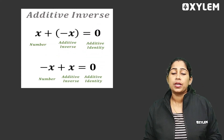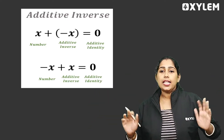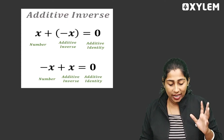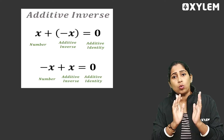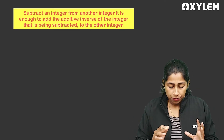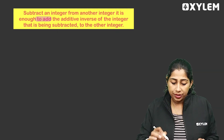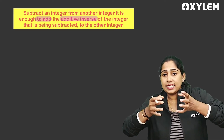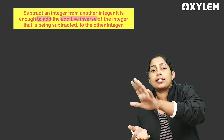Additive identity. Additive identity. If you subscribe to this channel, this is one of the ways we learn. To subtract an integer from another integer, it is enough to add. Subtract an integer with the additive inverse of the integer that is being subtracted.